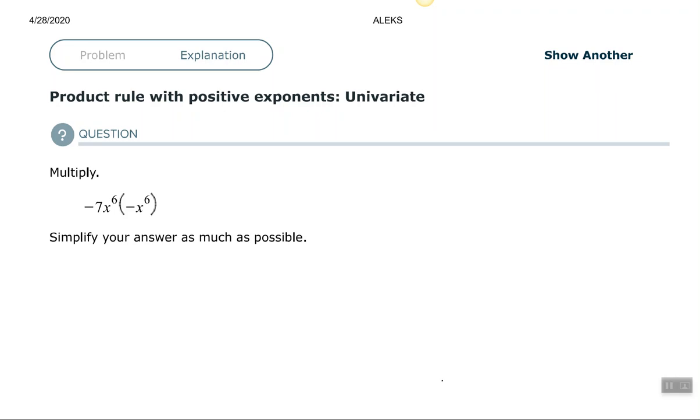Hey, hey, good people. Arthur Morris here. I hope all is well. In this video, we are going to look at the product rule with positive exponents. It says univariate, that means only one variable. So we don't have an x and a y, we just have an x here.